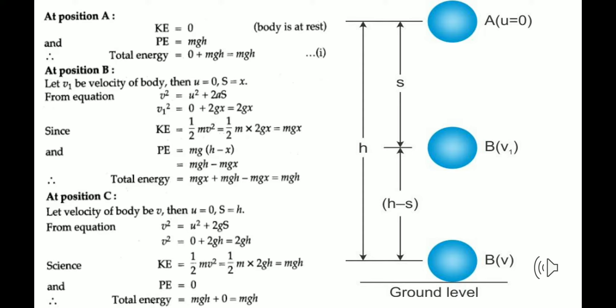At position A, whatever energy is stored in the ball is potential energy — it has reached maximum height, so there is no energy to move up further. Kinetic energy is zero, and potential energy is mgh, where m is the mass of the ball, g is acceleration due to gravity, and h is the height at A. Therefore, total energy — that is kinetic energy plus potential energy — equals zero plus mgh, which gives mgh.